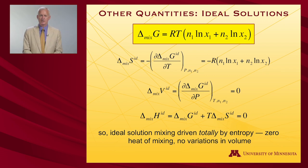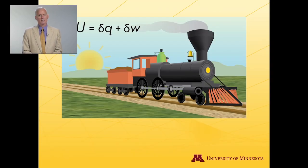So ideal solution: driven totally by entropy, no heat of mixing, no variation in volume. And by no variation in volume, what I mean is no variation in the total volume of the solution compared to the sum of the volumes of the two original quantities. All right, that's the beginning of ideal solutions. We'll look at them in a bit more detail in the next lecture.